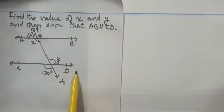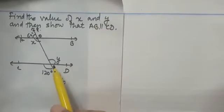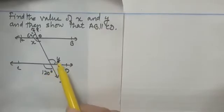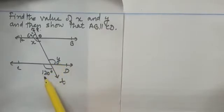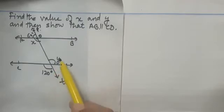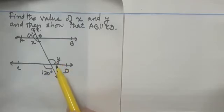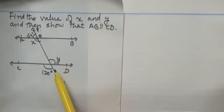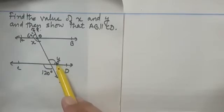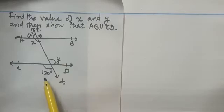Now observe here: the transversal T and CD are two intersecting lines. We can see that y and 120 degrees are making vertically opposite angles. We know that vertically opposite angles are equal, so the value of y is 120 degrees.